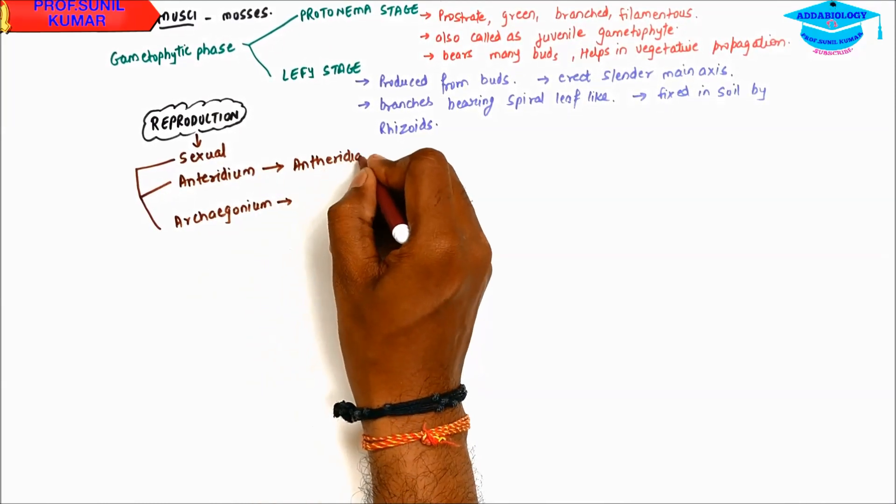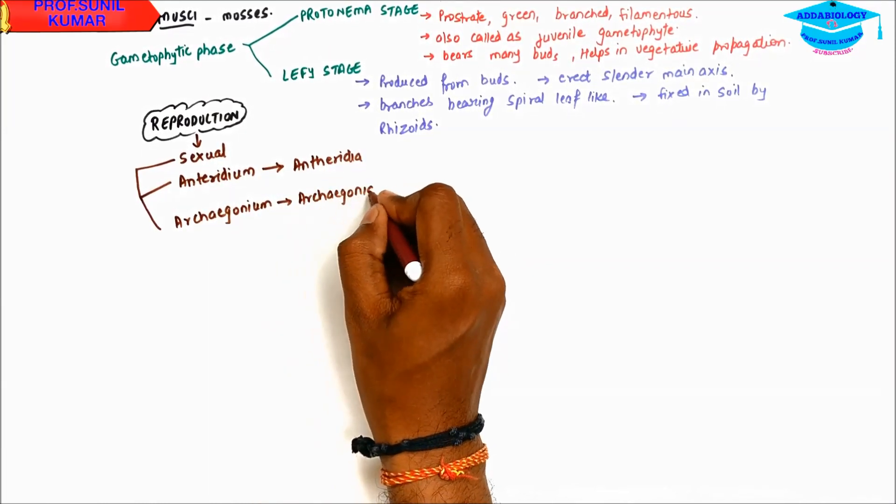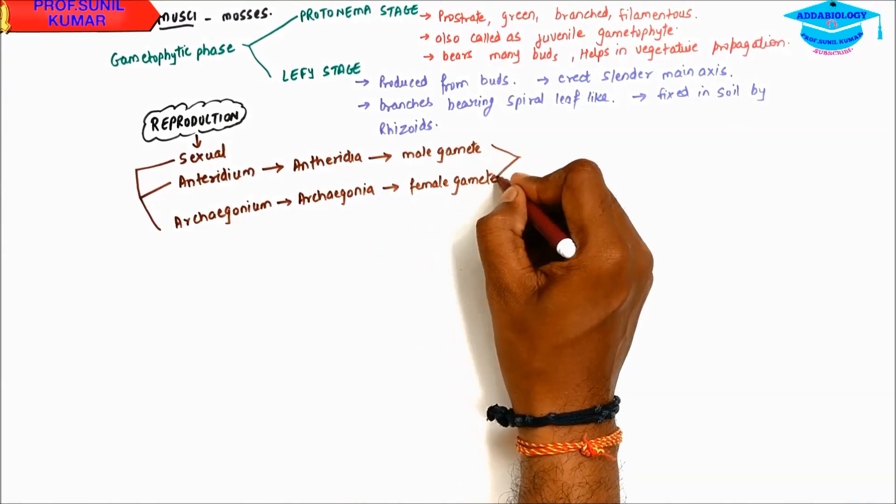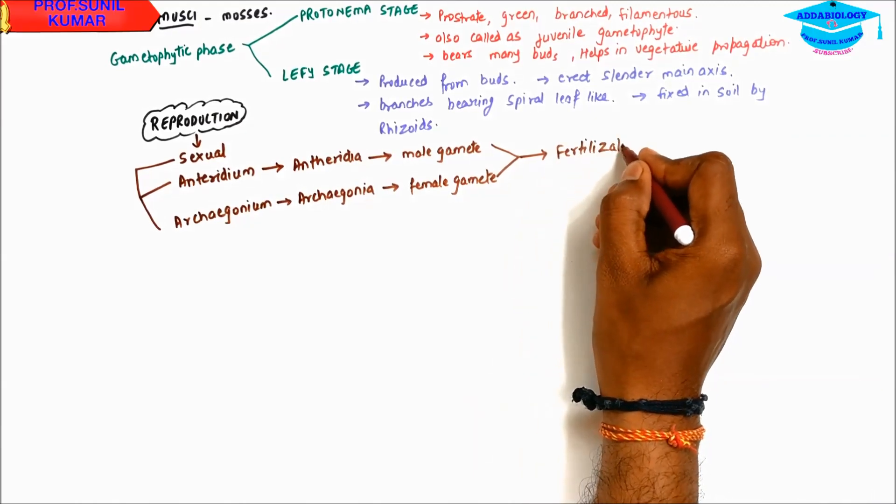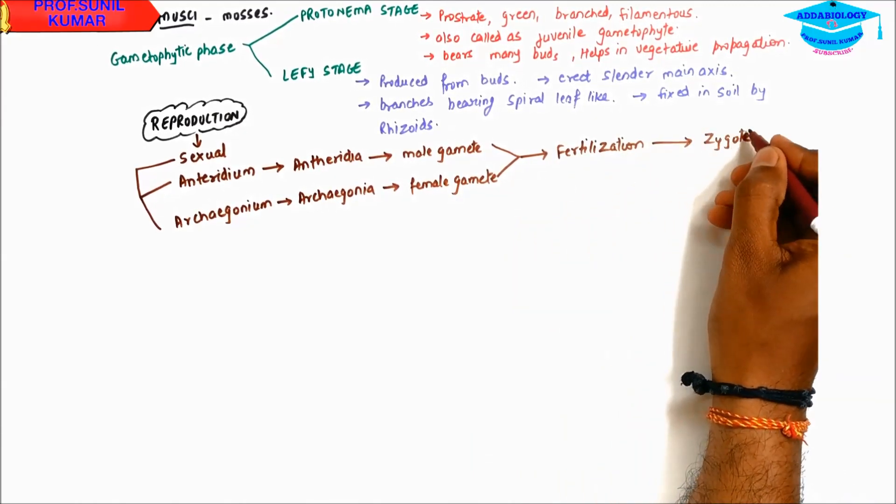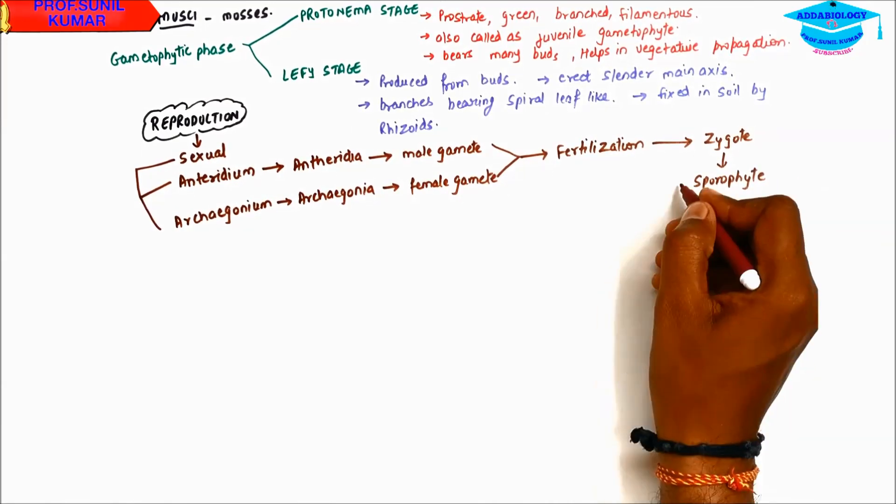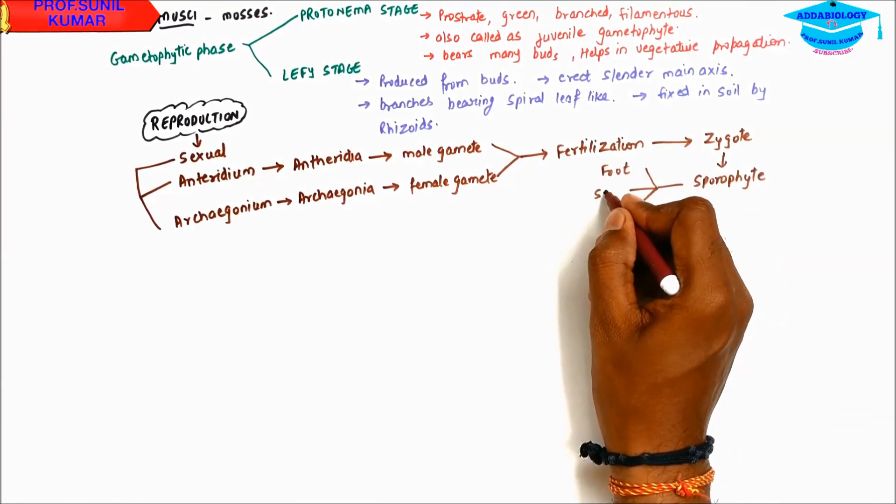Antheridium produces antherozoids, archegonium produces archegonia. Antherozoid is the male gamete and archegonia is the female gamete. Both male and female gametes unite together in the process of fertilization and form zygote. Zygote develops into sporophyte which gives rise to foot, seta, and capsule.